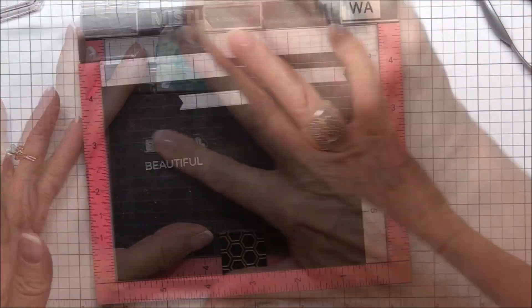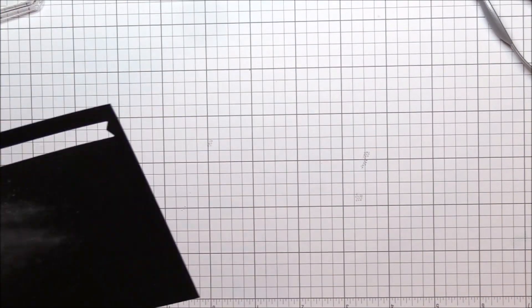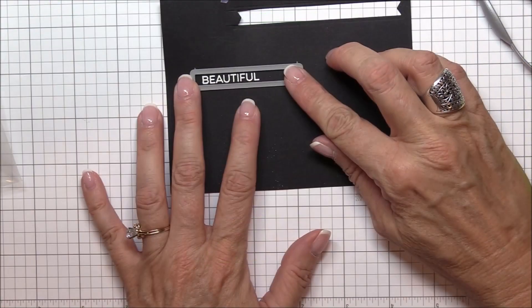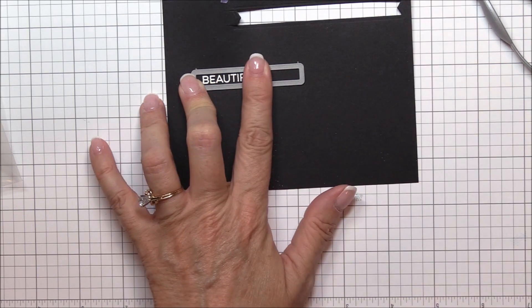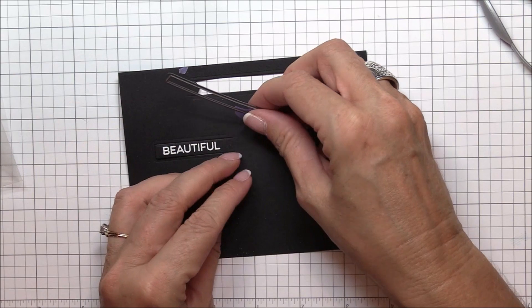I'm stamping the word beautiful onto a scrap of Black Licorice cardstock using Sweet Tooth pigment ink, then I'll heat emboss it off camera with white embossing powder. I love the impact of the white against the black. I'll use one of the Skinny Sentiment Strip Die-namics to die cut the word.